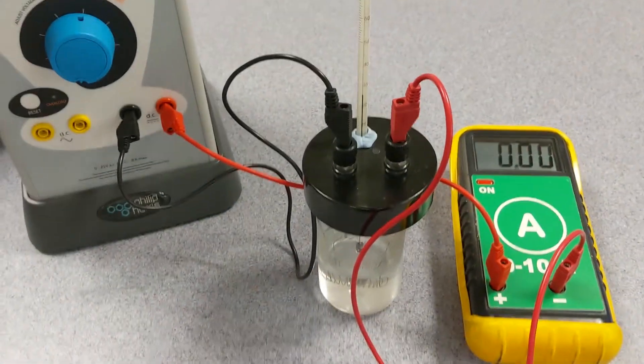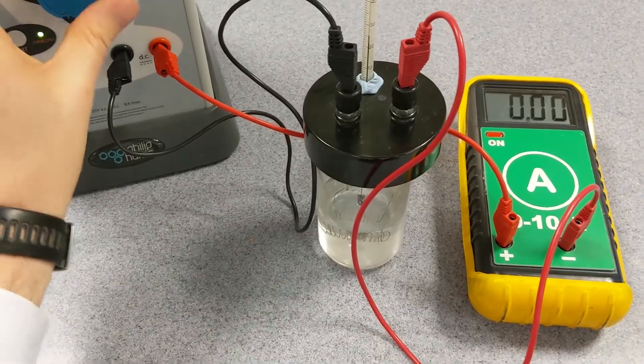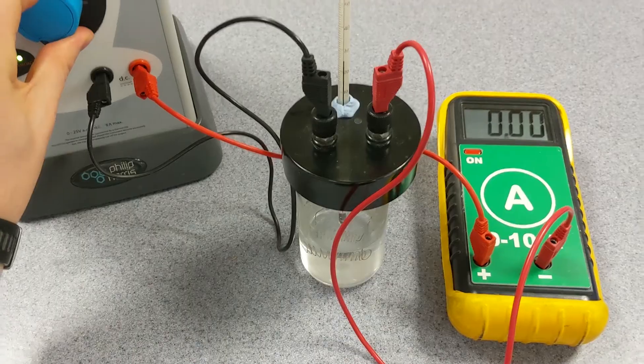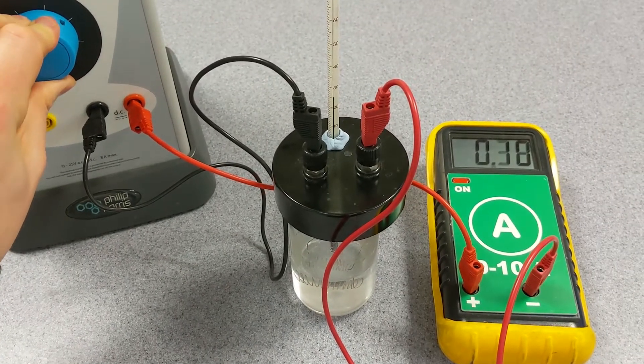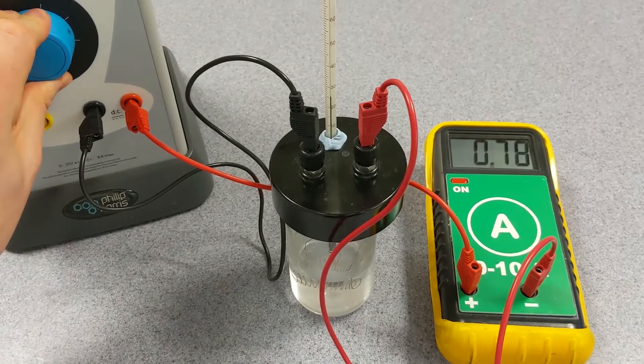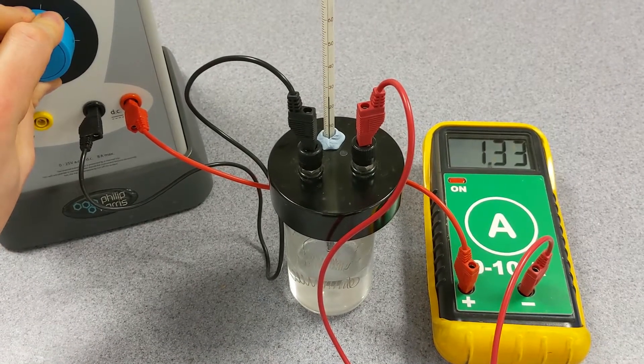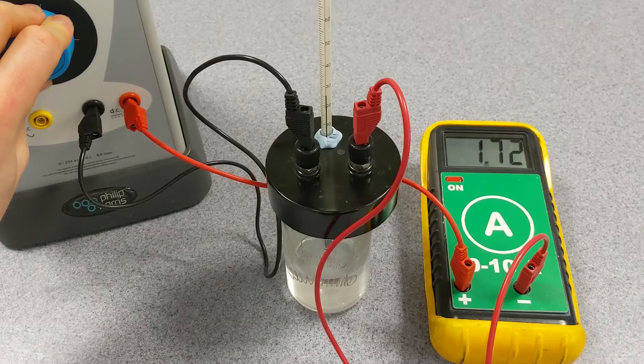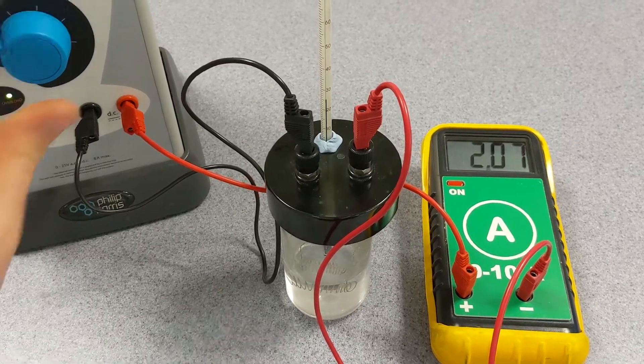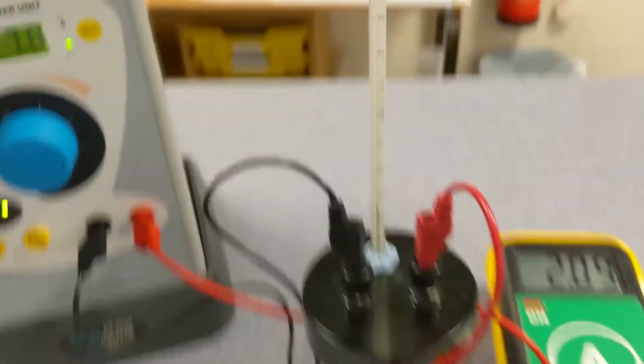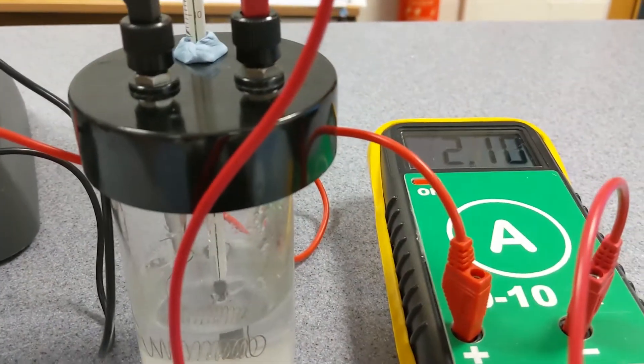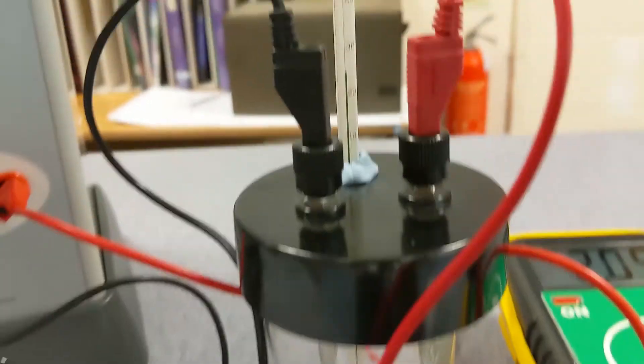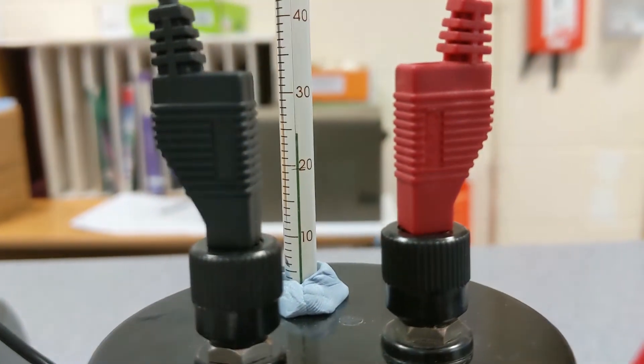Now what I'm going to do is turn the power supply on and increase the potential difference until we get a current of about two amps. Now the current is about that, we're just going to watch the temperature.